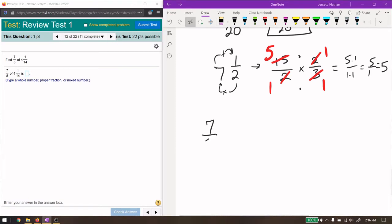7 eighths of 4 and 1 fourteenth. Again, improper fractions are going to be the way to go here. So we get 7 eighths of, I shouldn't say equals, not really good. 7 eighths of 14 times 4 is 20 times 2 is 56. And then plus 1 is 57.